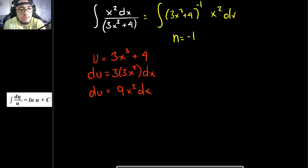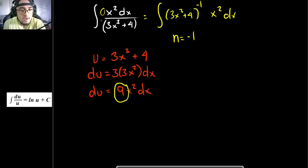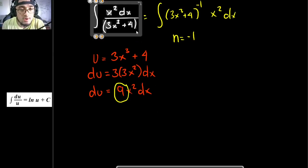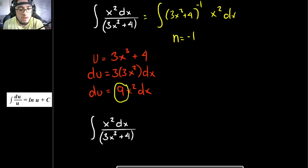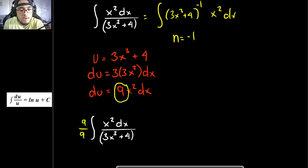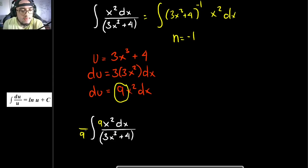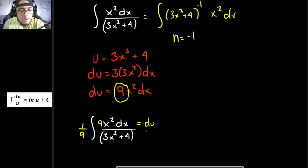We check if our expression follows the format of the integral of du divided by u. We have x squared dx in the numerator and 3x cubed plus 4 in the denominator. The format is close, but there is a missing factor of 9. So we multiply by the identity 9 over 9, moving the 9 inside the integral. Now the numerator matches du exactly, and u is identified.